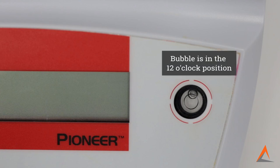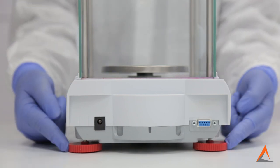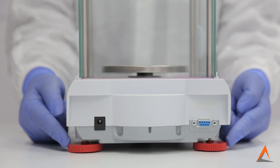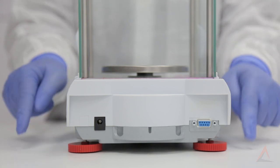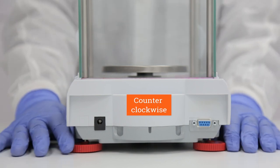If the air bubble is in the twelve o'clock position, this translates to the back of the balance being too high. Therefore, I would need to lower the back two feet. In order to lower the back, I am going to turn both back feet counterclockwise until it is also vertically level.